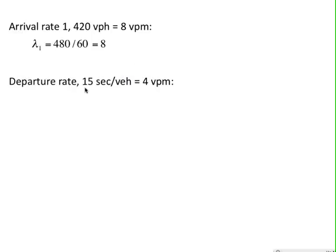The departure rate, the service rate if you will, is 15 seconds per vehicle, which converts to 4 vehicles per minute, and that's called mu, typically. So 60 seconds per minute divided by 15 seconds per vehicle gives vehicles per minute, 4.